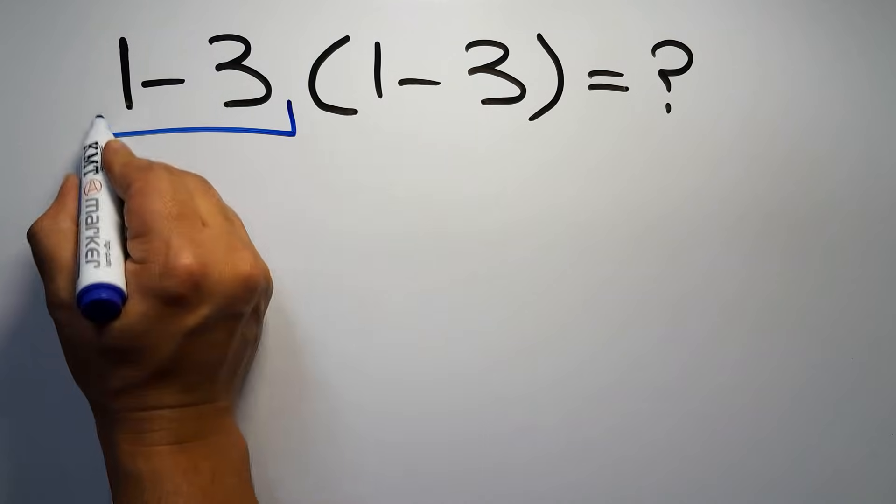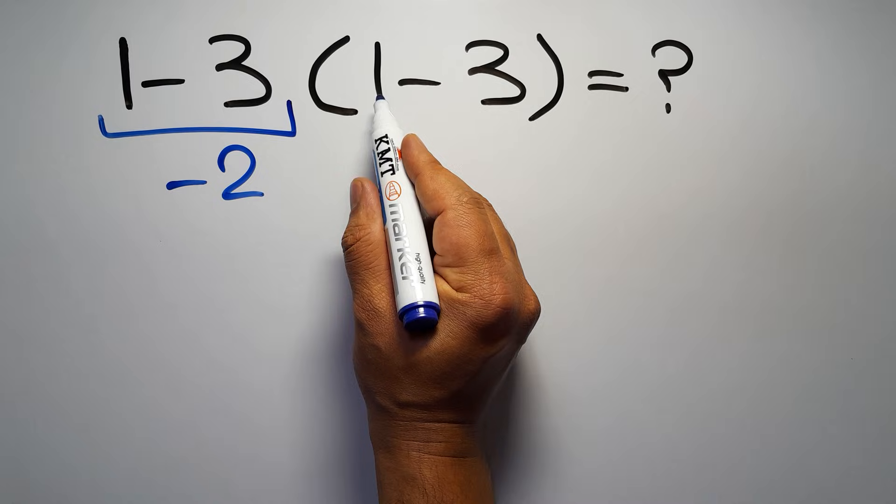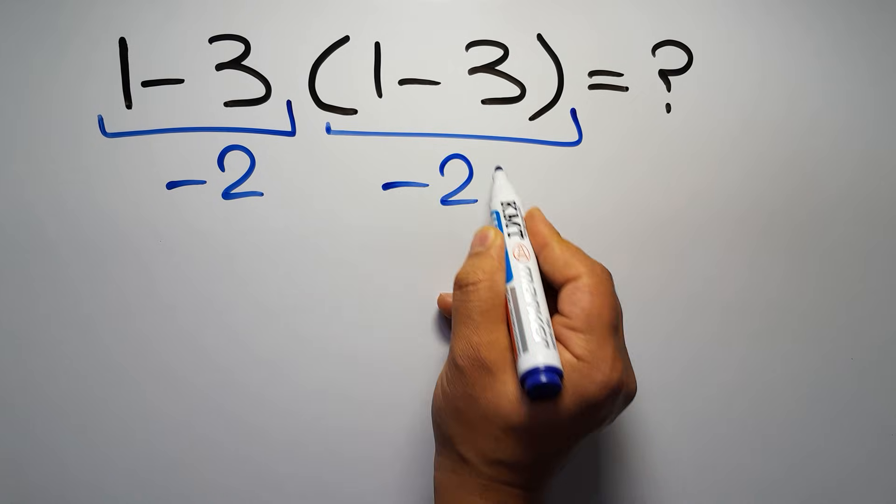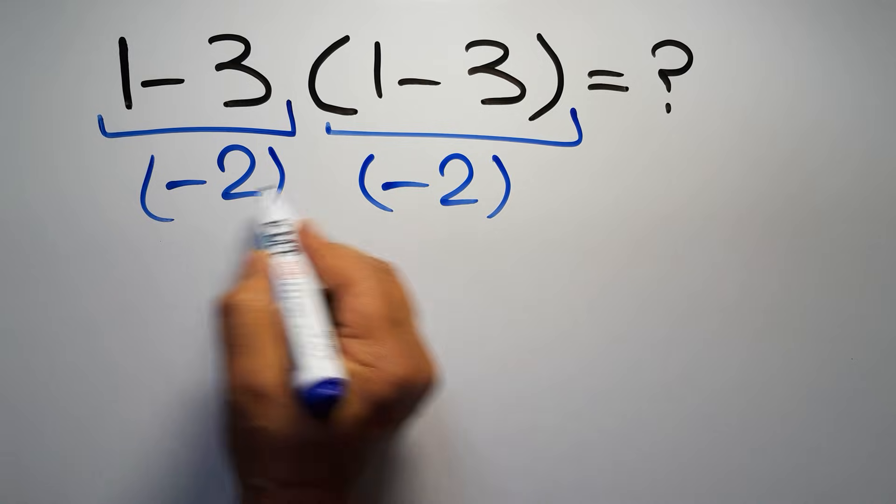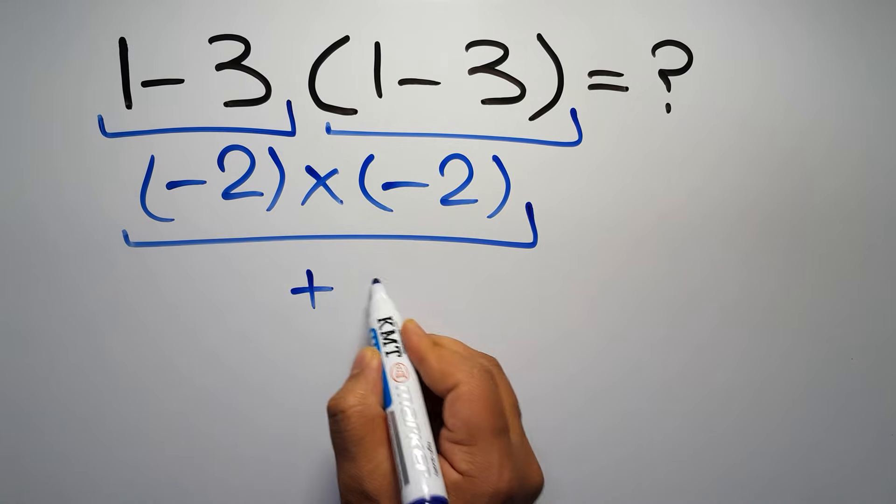1 minus 3 gives us negative 2, and again here inside these parentheses we have 1 minus 3, so negative 2 times negative 2 gives us positive 4.